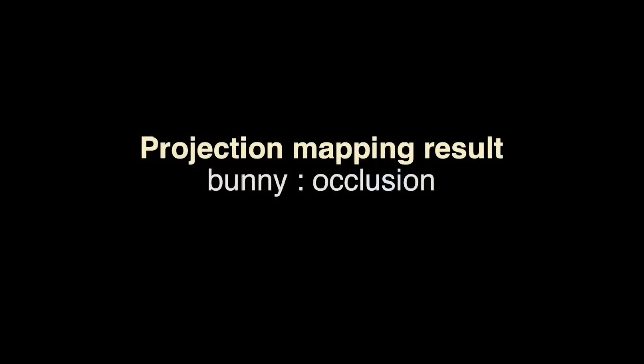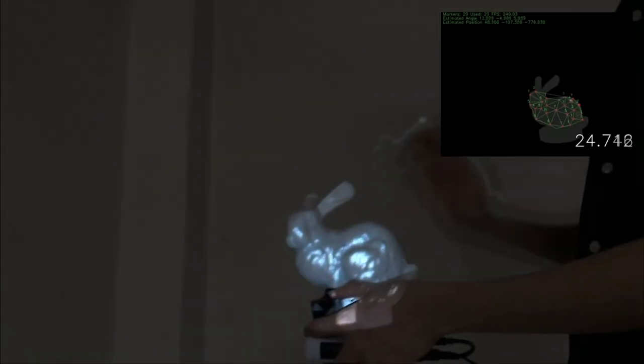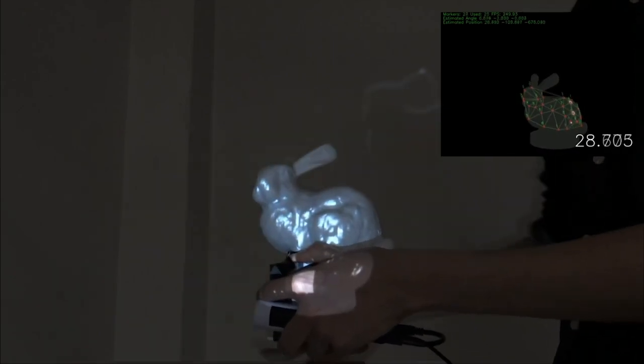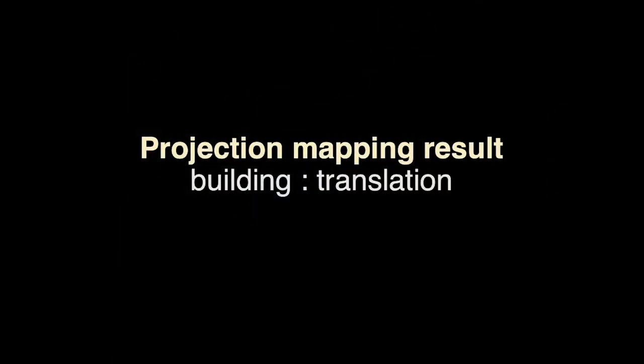This is the result of the bunny object. When the object is covered by a hand, a large part of the object is covered. The texture is still robustly mapped onto the object.